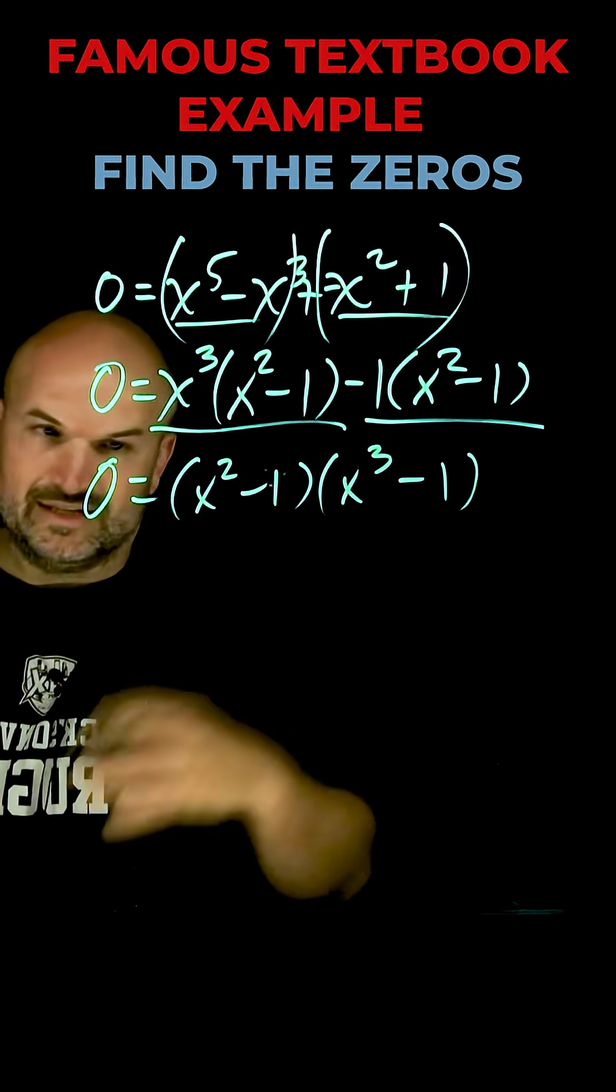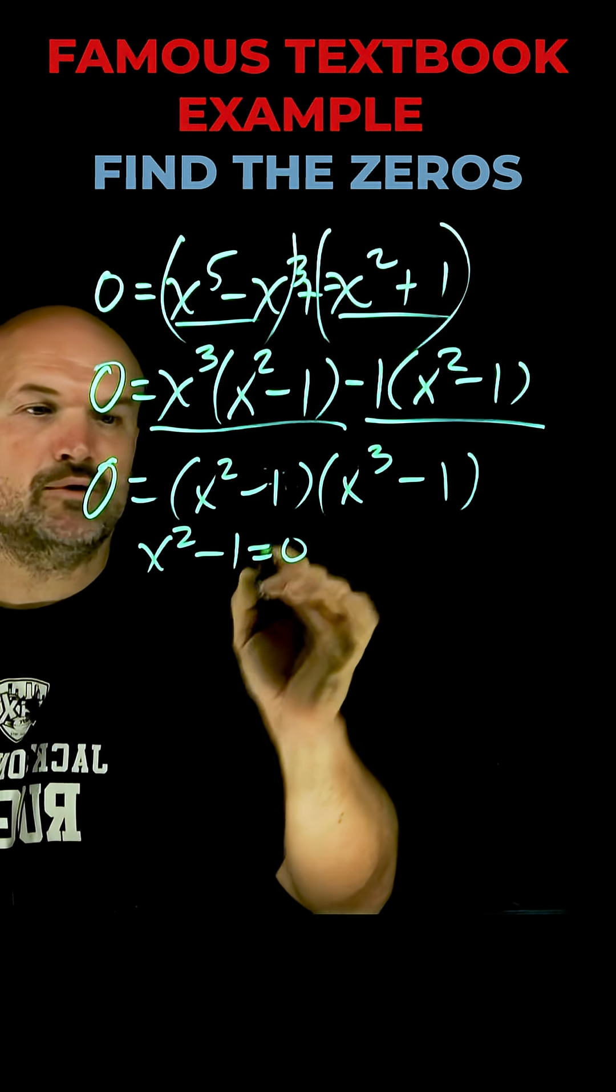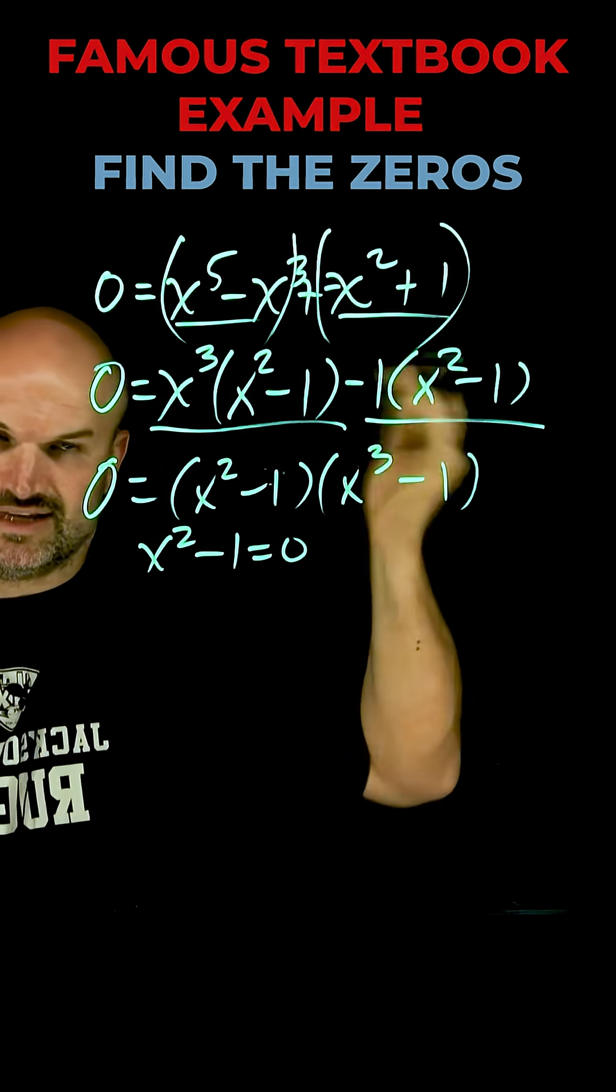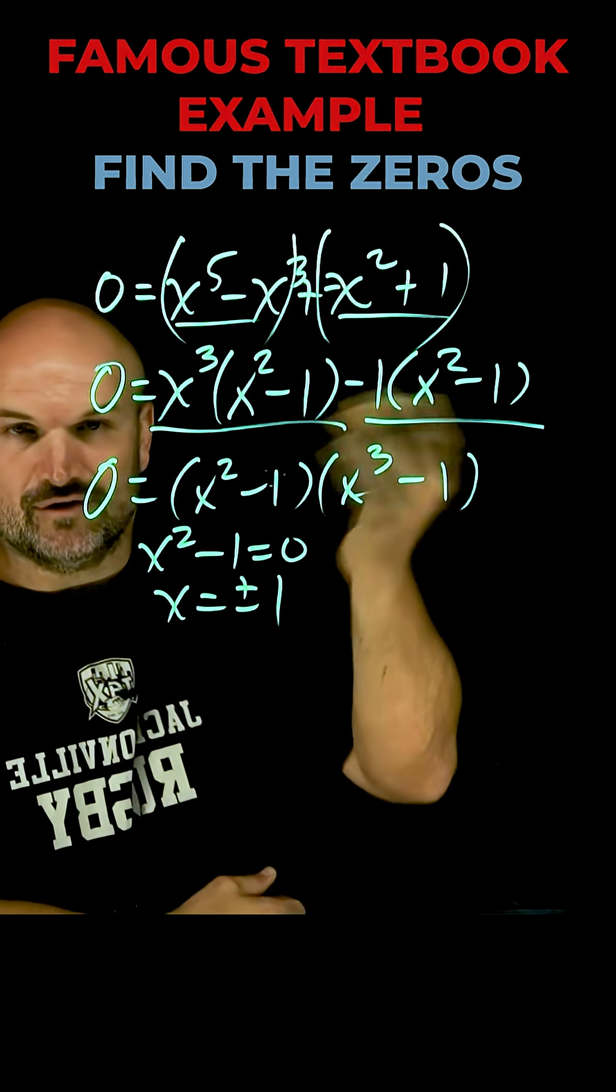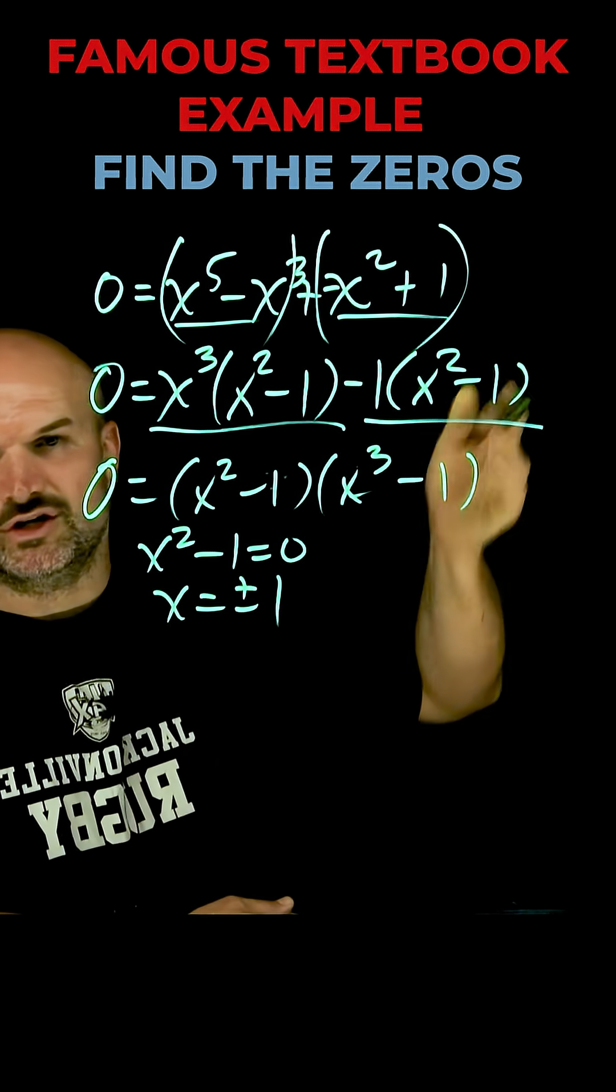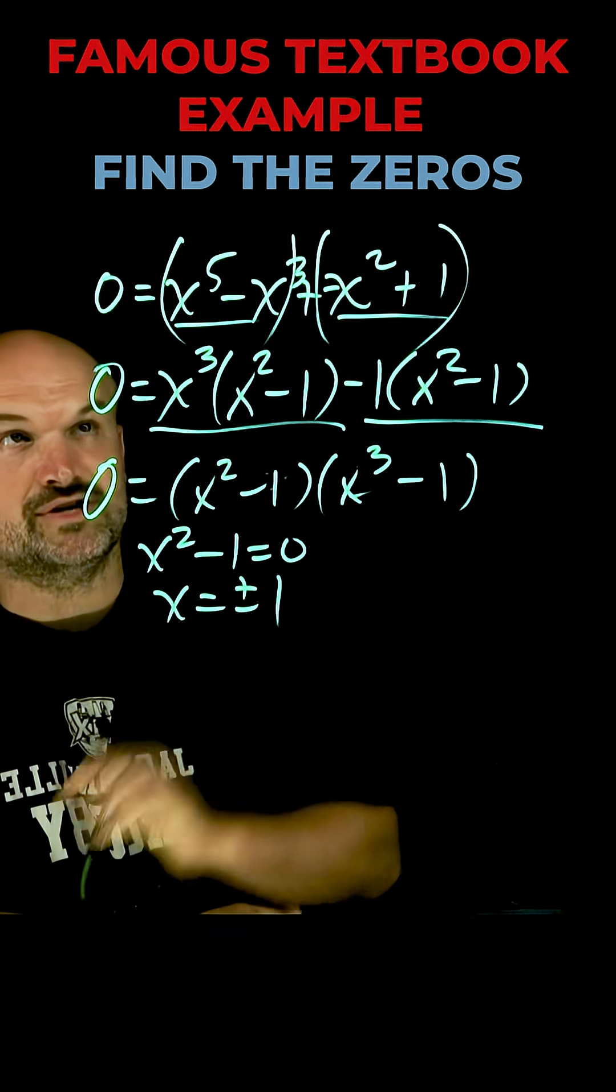Now I have a product equal to zero. So we can go ahead and use the square root method to solve this. Add one, take the square root of both sides, x is going to equal a plus or minus one. Be careful doing that over here though, because if you add one and take the cube root of it, you're only going to get one solution.